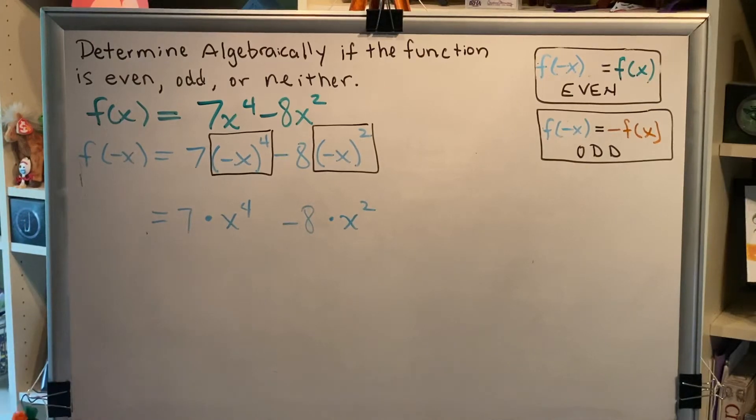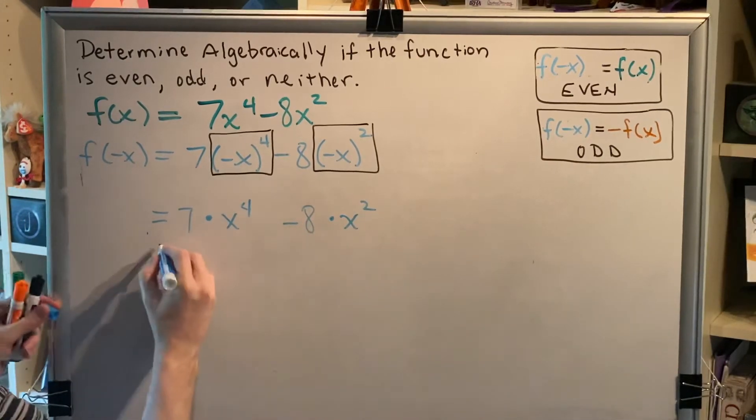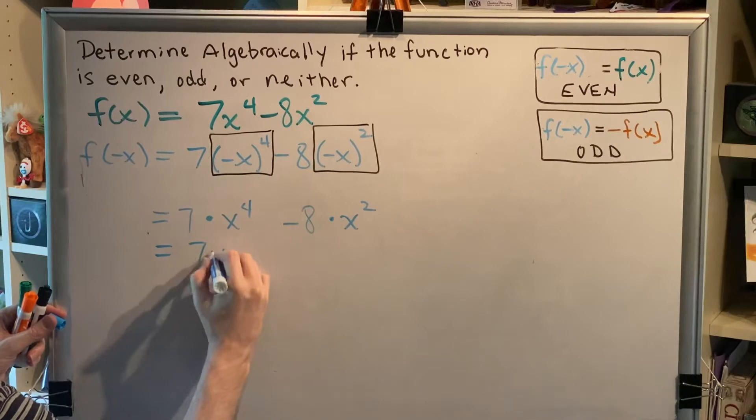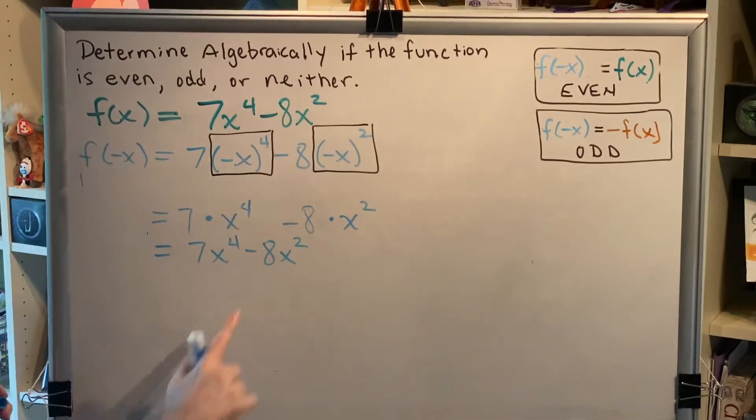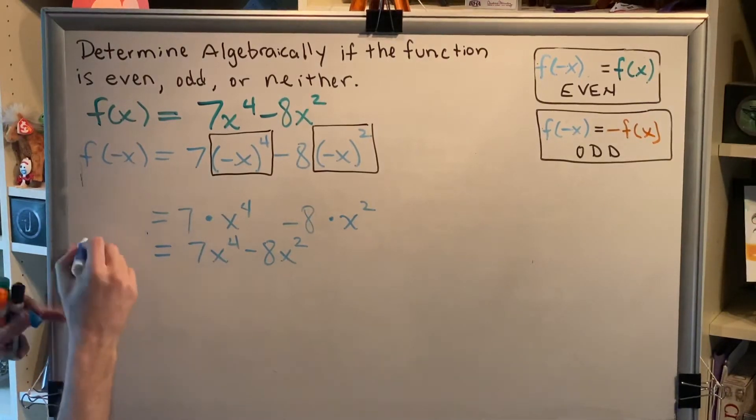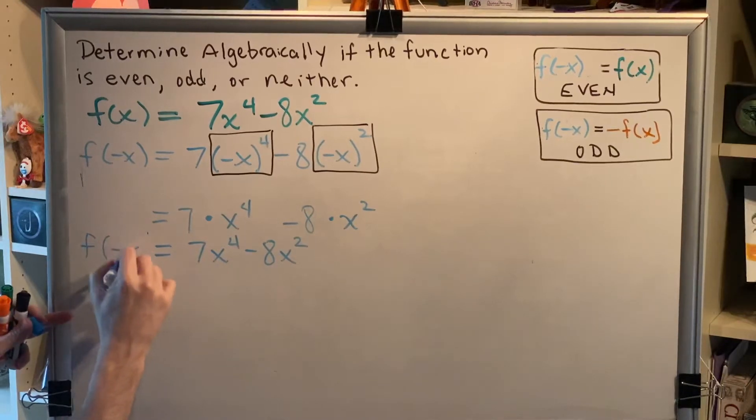Okay, next we do the multiplication part of order of operations. So we get 7x to the fourth minus 8x squared. And then finally we do the subtraction. But these are unlike terms that cannot be combined, so this represents our final answer for finding f of negative x.